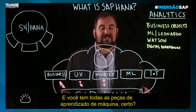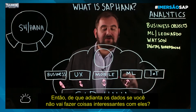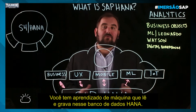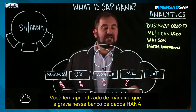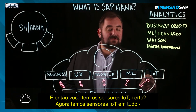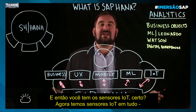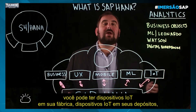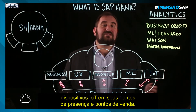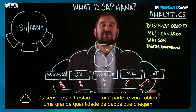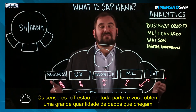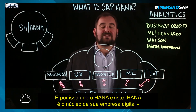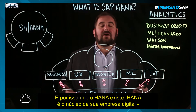As a workforce goes increasingly mobile, you've got more and more information coming from those data sources. Then you've got all of the machine learning pieces — what good is data if you're not going to do interesting things with it? Machine learning is both reading from and writing to that HANA database. And then you've got IoT sensors in everything — in your factory, your warehouses, your points of presence and points of sale. You've got a massive amount of data coming in, and you need a database that's able to handle it. That's why HANA exists.